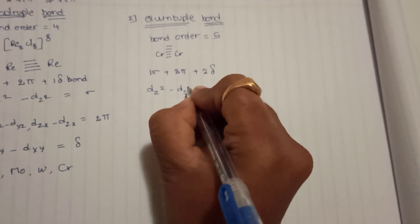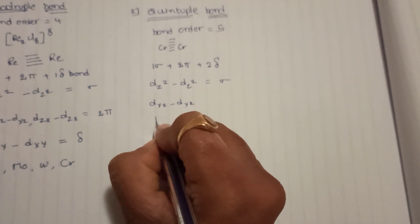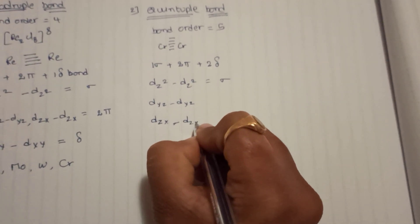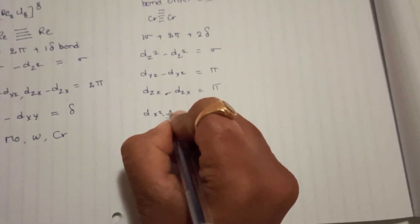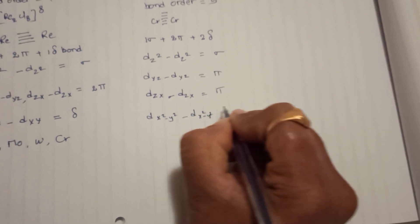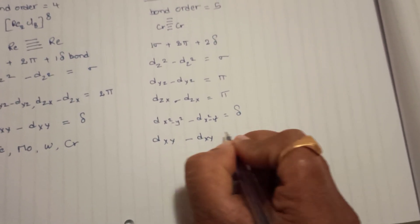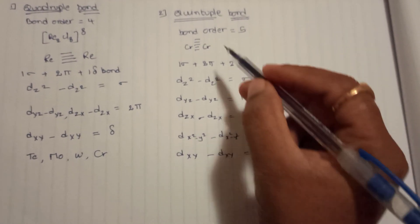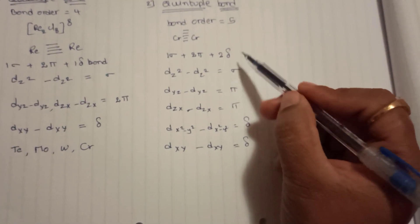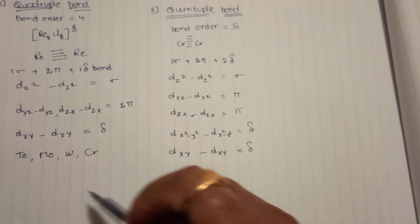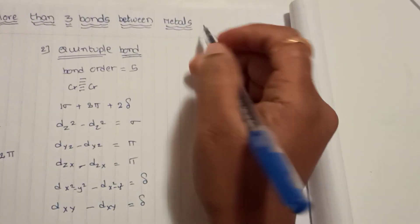What orbital overlaps result in these bonds? Again, dz²–dz² overlap gives the sigma bond. dyz–dyz and dzx–dzx overlap give the 2 pi bonds. dx²y² orbitals undergo sideways overlap and result in one delta bond. dxy–dxy undergo sideways overlap and result in the second delta bond. In this way there is a possibility of getting 5 bonds between metals: 1 sigma, 2 pi, and 2 delta. These types of bonds are observed in chromium clusters.